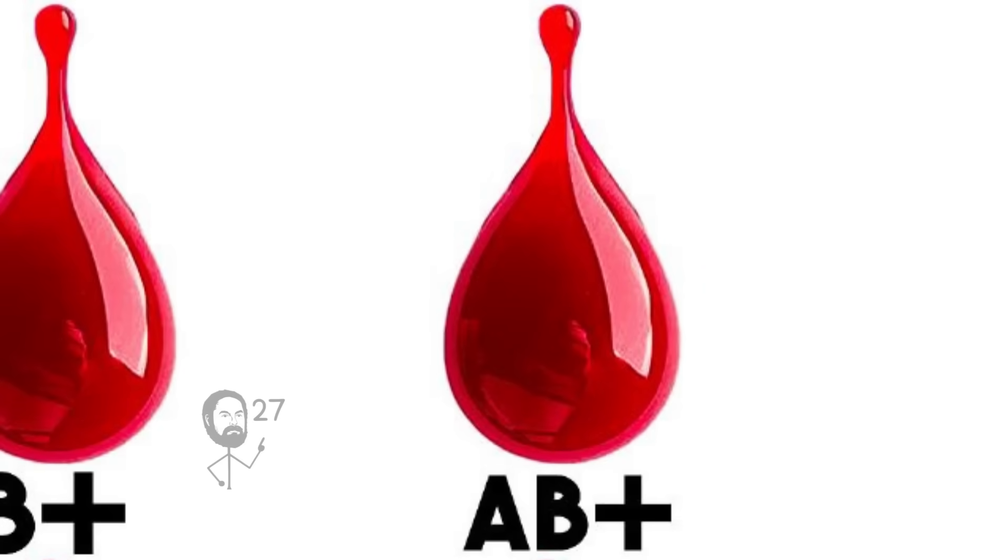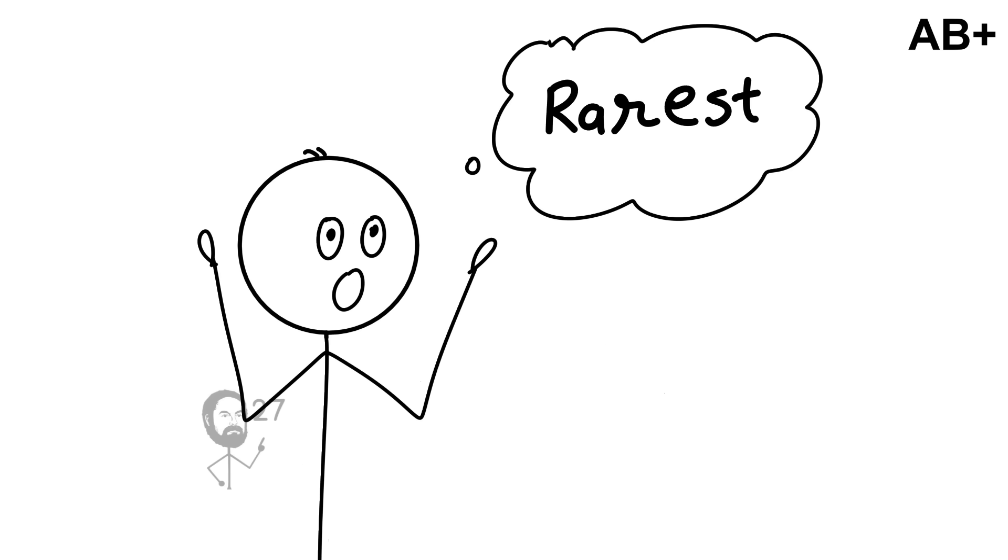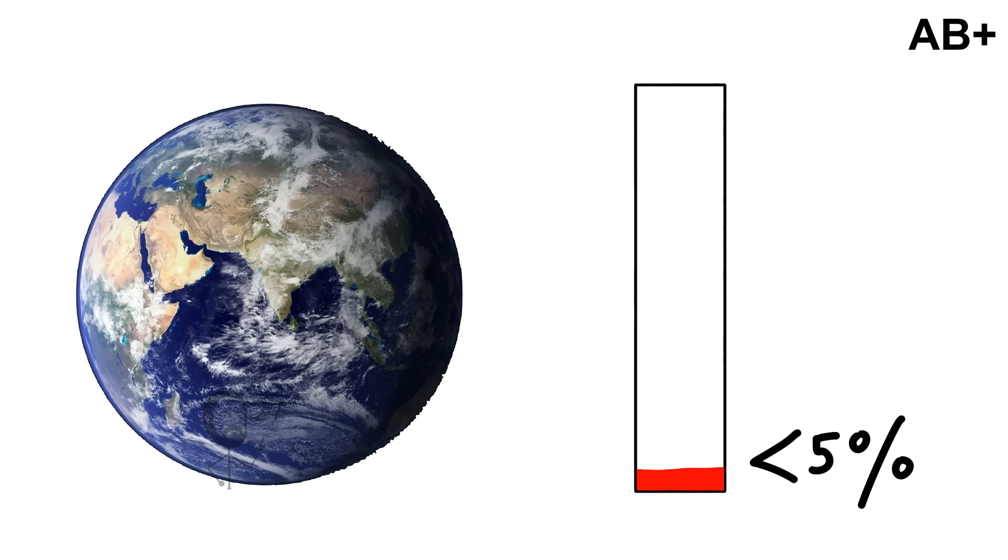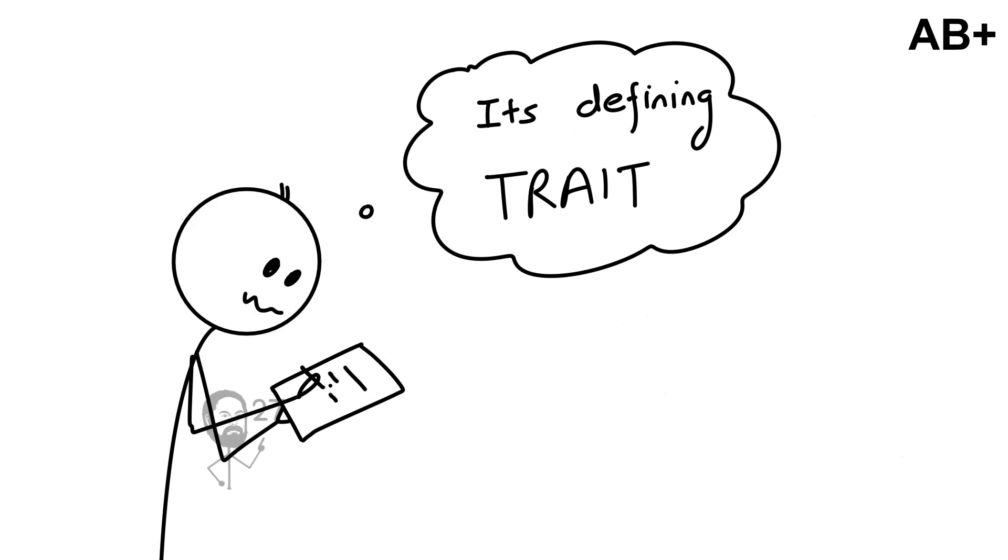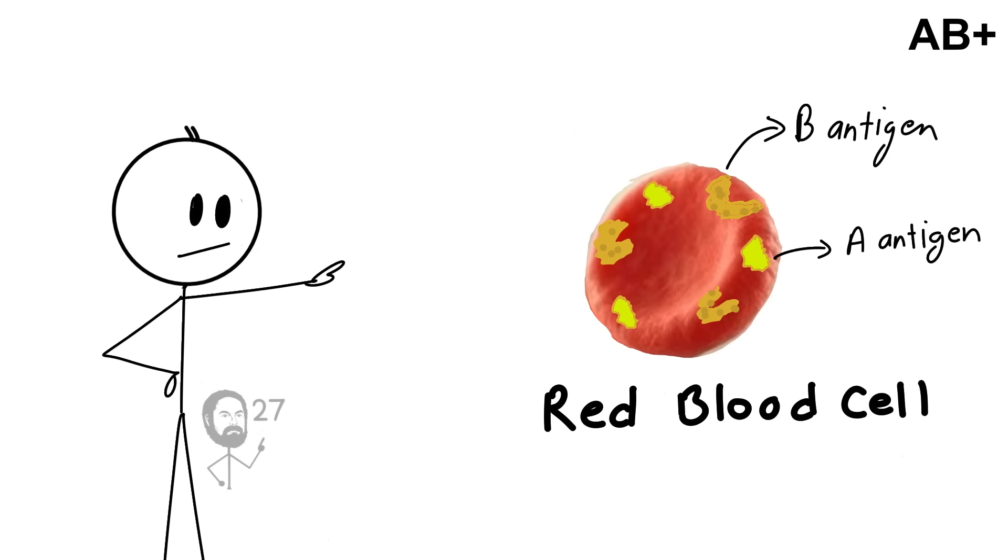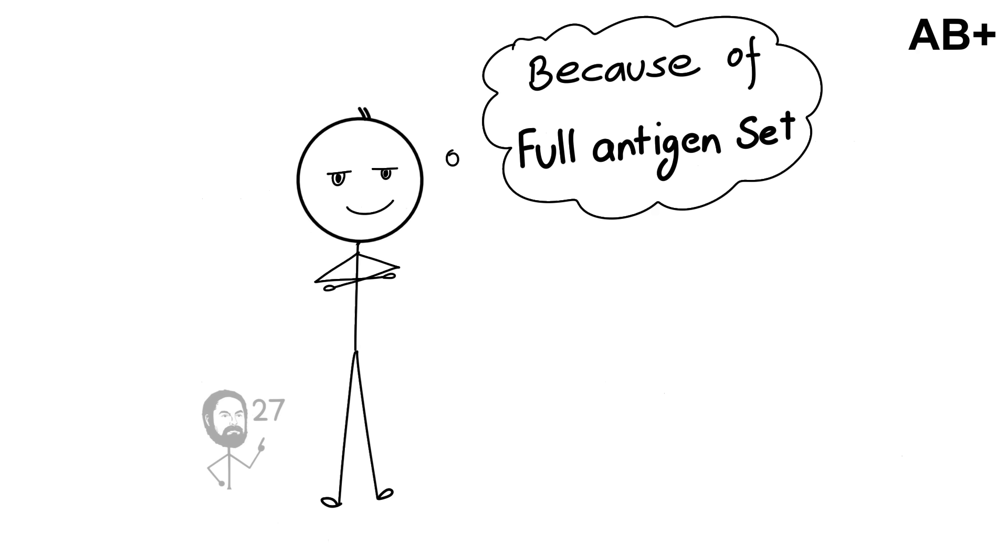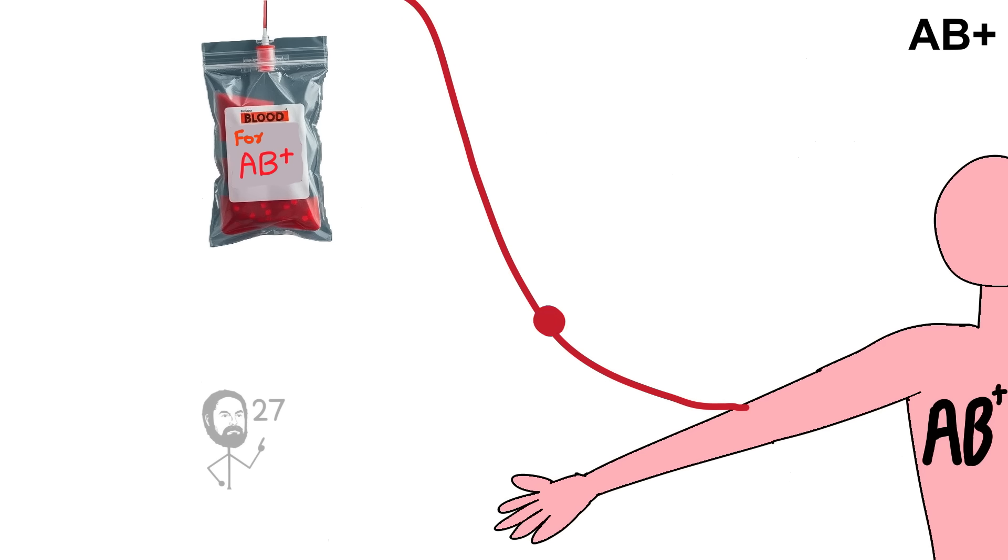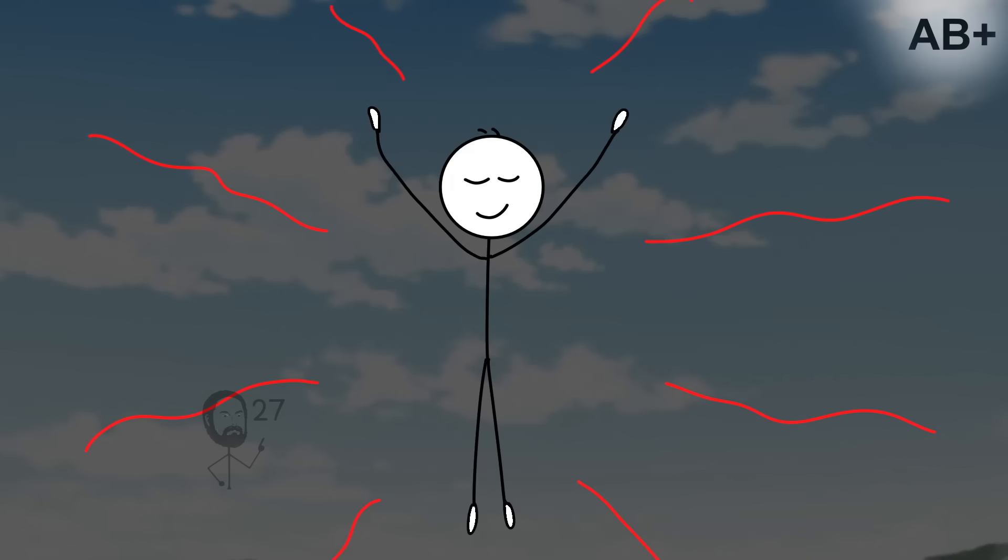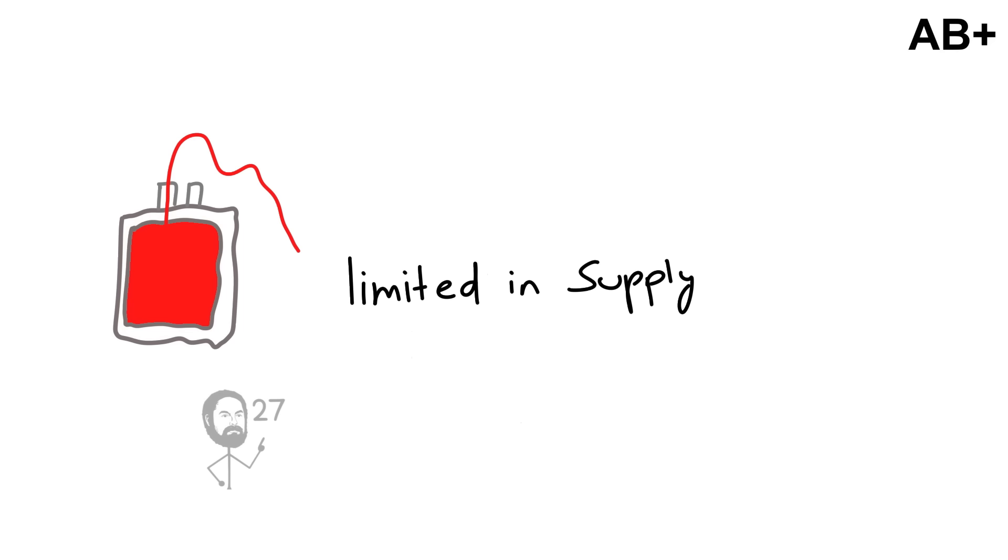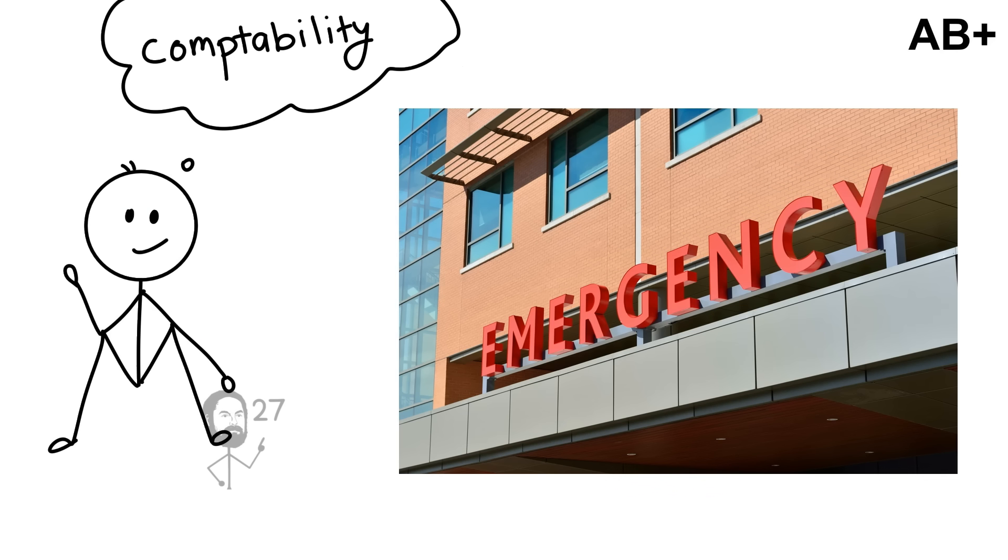AB-positive is the rarest of the major positive blood types, carried by less than 5% of the global population. Its defining trait is that red blood cells display both A and B antigens, along with the RHD factor. Because of this full antigen set, AB-positive individuals can receive red cells from any donor: A, B, AB, or O, whether positive or negative. This makes them the universal recipient in transfusion medicine, a unique advantage when blood supplies are limited or emergencies demand quick compatibility.